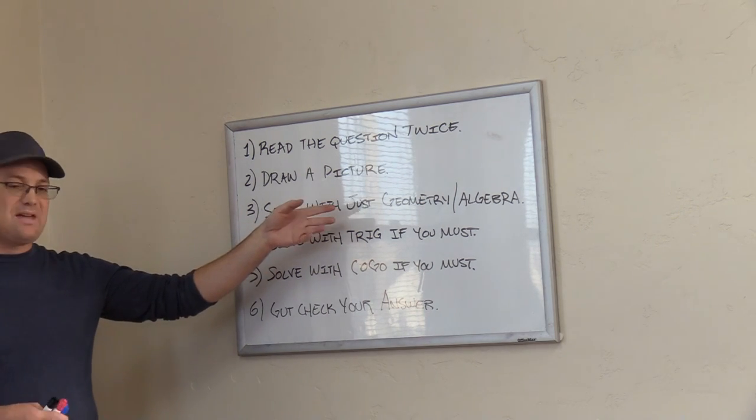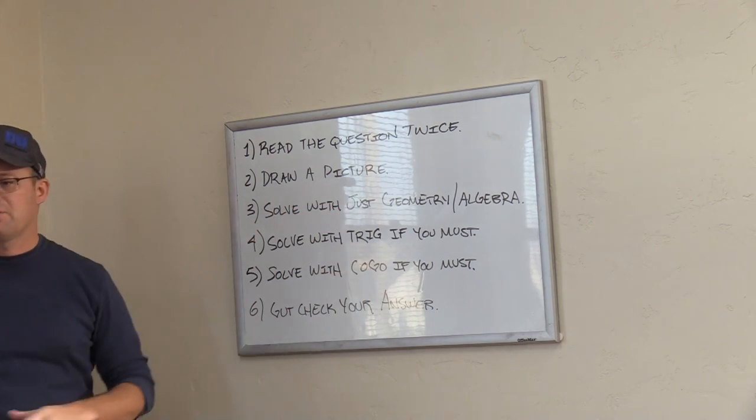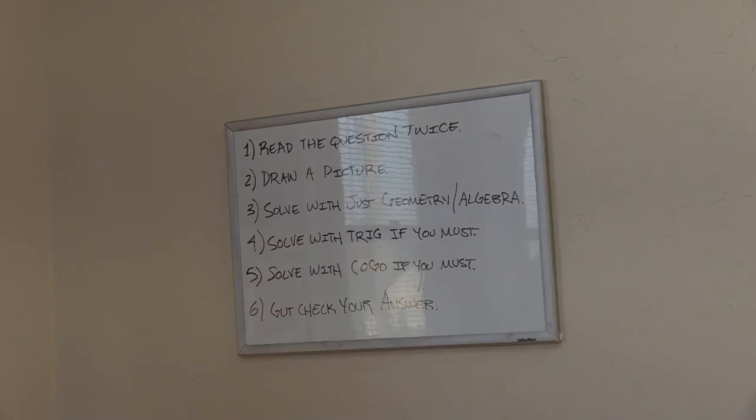Usually if you can solve it with Pythagorean theorem and you're using trig, you're introducing an extra step. You're calculating an angle you don't need to calculate.